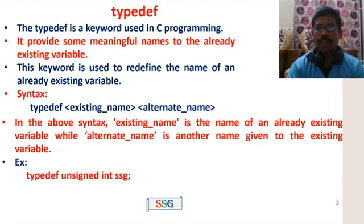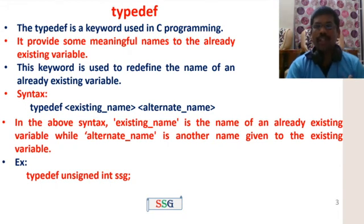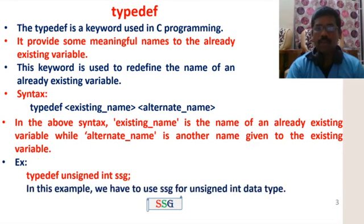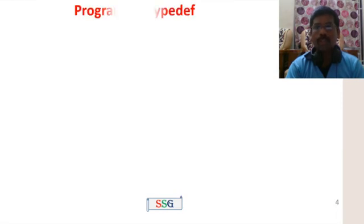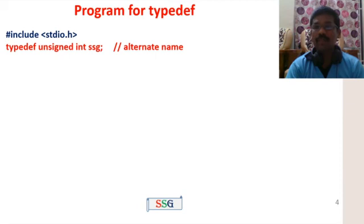Example: typedef unsigned int ssg. Here, typedef is followed by the existing data type unsigned int, and ssg is the alternate name. In this example, we use ssg for the unsigned int data type. The first program for type definition includes stdio.h, then typedef unsigned int ssg as the alternate name.